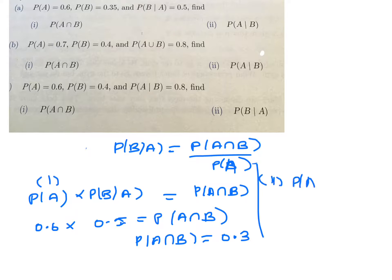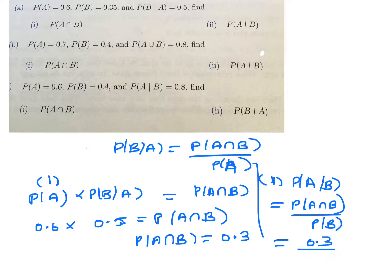For the second part, the probability of A given B — instead of B given A, it's A given B — is A intersection B over the probability of B. So that's 0.3 over the probability of B, which is 0.35. That gives us 30 on 35, which is 6 on 7.